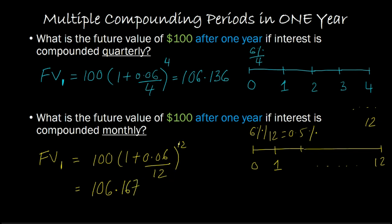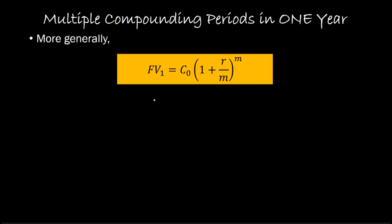Notice the pattern: the number of times interest is getting compounded — I am dividing my annual interest rate by that number, but then raising it to the same number. So 4 and 4 for quarterly, 12 and 12 for monthly. More generally, here's the formula: if you're determining the future value of some cash flow one year from now, you simply compute (1 + R/M)^M, where M is the number of times interest is getting compounded. M = 2 for semi-annual, M = 4 for quarterly, and M = 12 for monthly compounding.